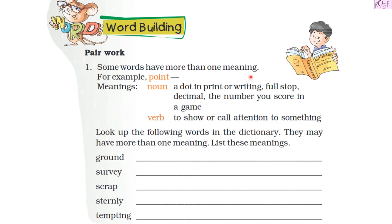We know that some words have more than one meaning. For example, 'point' — here they have given us two meanings of the same word. One is the noun and the second is a verb. As a noun, 'point' means a dot in print or writing, a full stop, or a decimal, or the number you score in a game — 'I got four points in the quiz.' As a verb, it means to show or call attention to something — 'Can you point out the mistake in this question?' — which is an action.